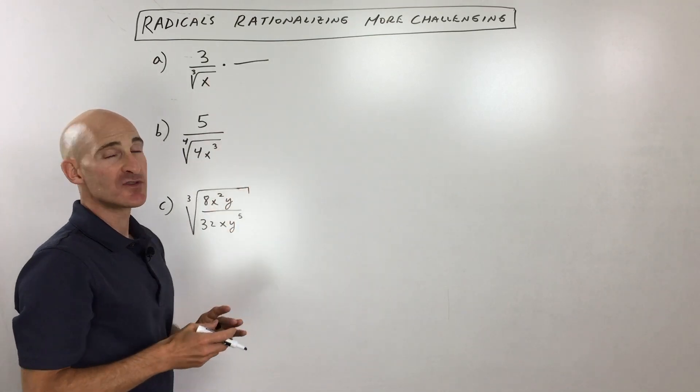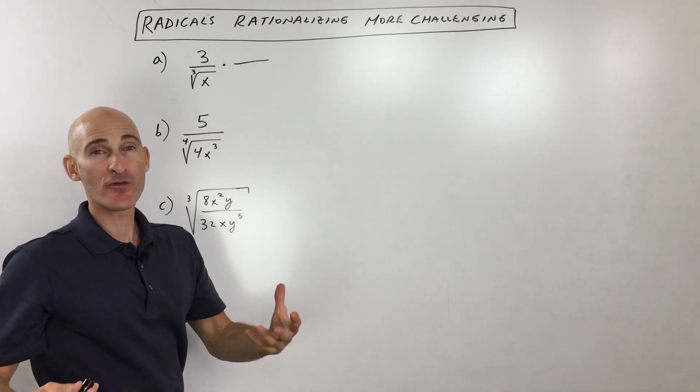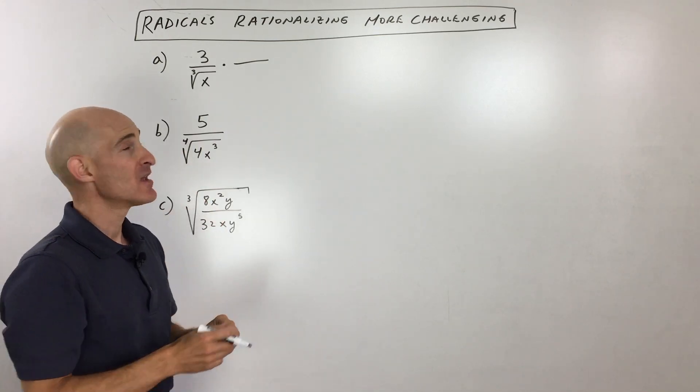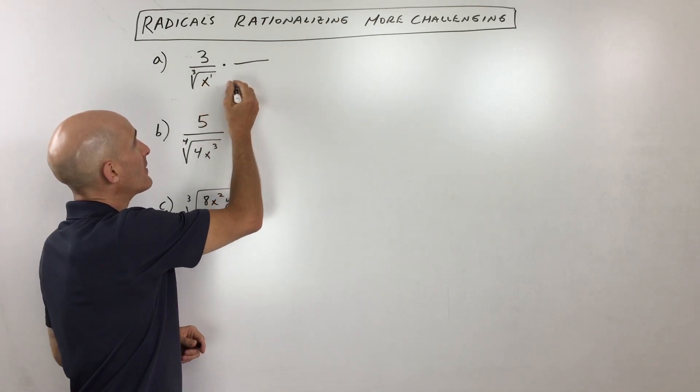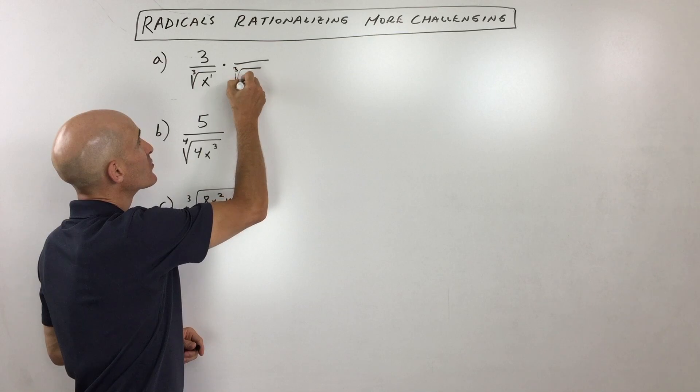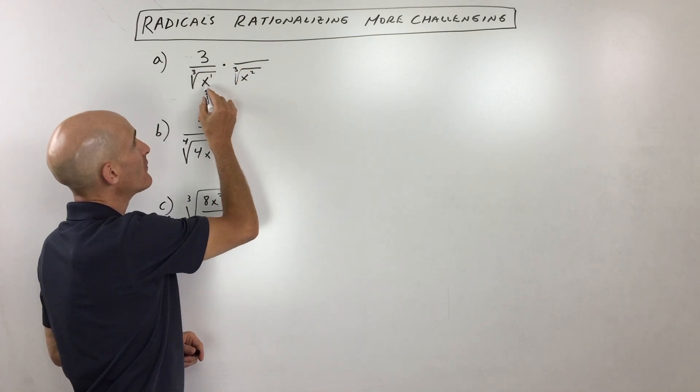Well, when you take the cube root of something, in order for it to be a perfect cube root, you need how many of them? You need three, right? So you can see right now we've got one. So what we really need is two more of these x's.